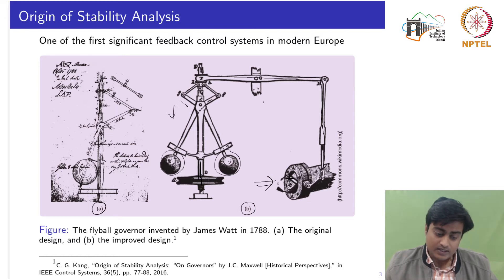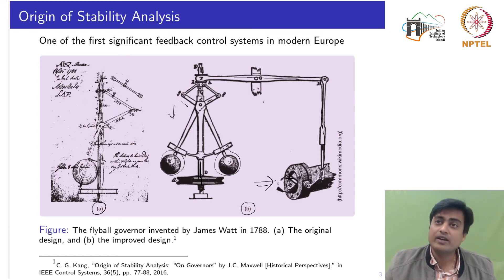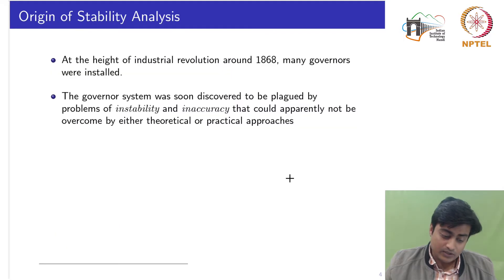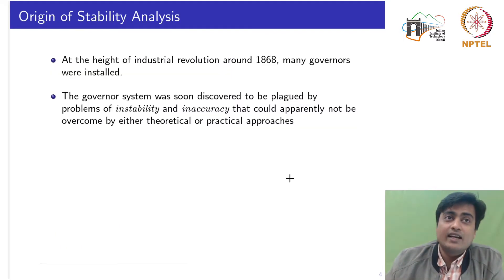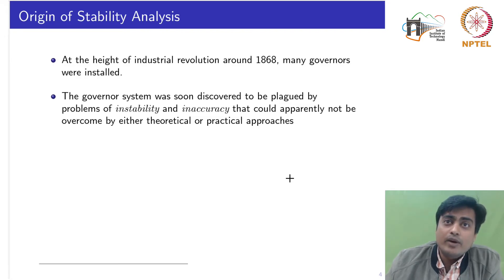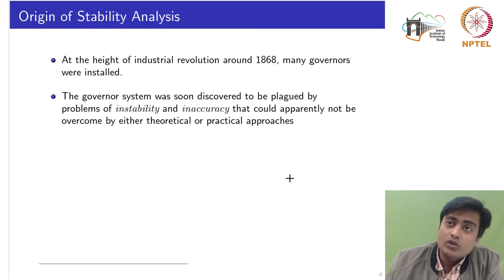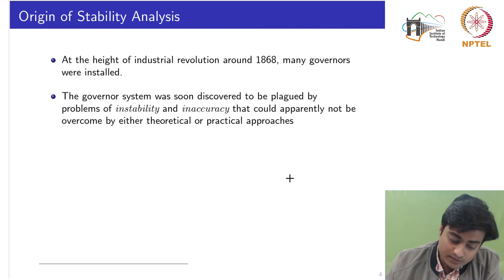This is in fact the first significant feedback control system in modern Europe. At the height of the industrial revolution around 1868, many such governors were installed. There were many improvements in the design of governors, but all those governor systems were highly plagued by inaccuracy and instability of their motion.